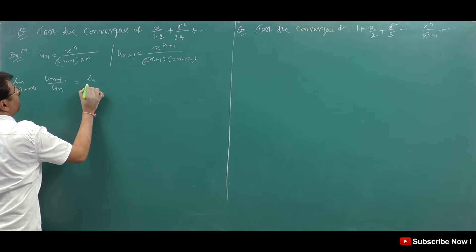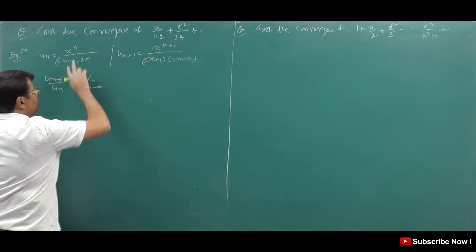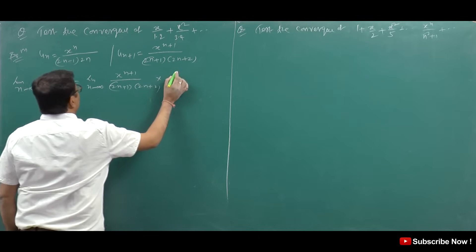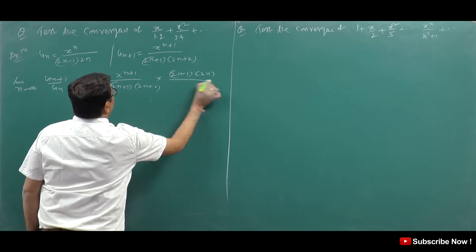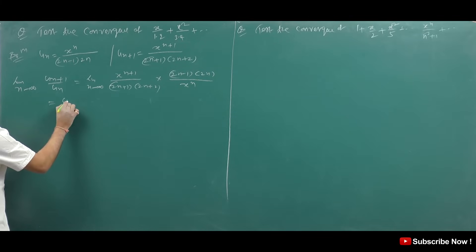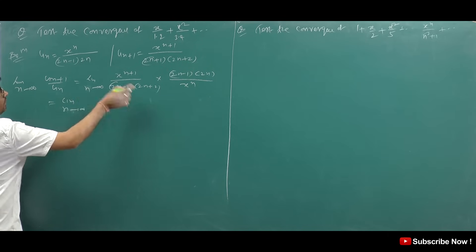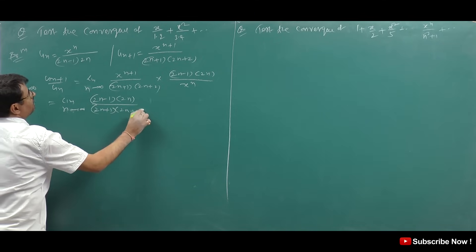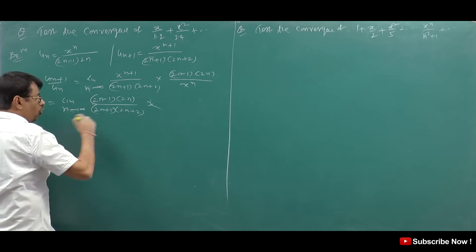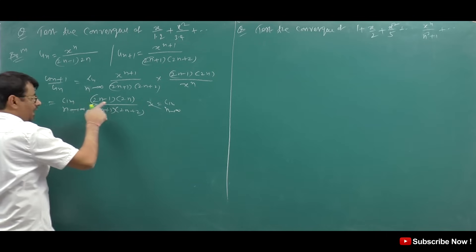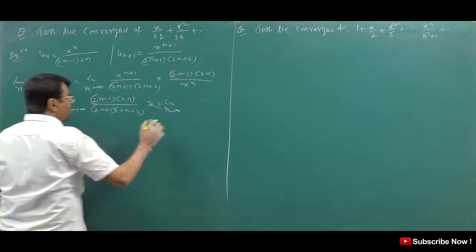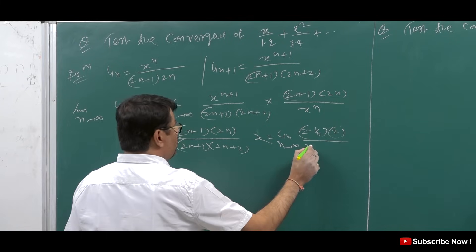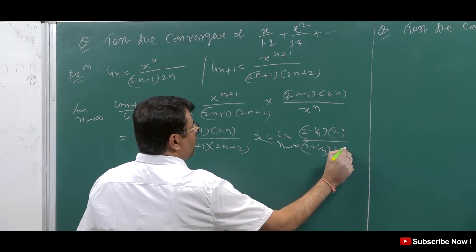We will check that the value of u_(n+1) upon u_n will be: limit n tends to infinity, we will divide — x to the power n+1 upon (2n+1)(2n+2), divided by x to the power n upon (2n−1)·2n. We simplify: limit n tends to infinity of (2n−1)·2n upon (2n+1)·(2n+2), multiplied by x.